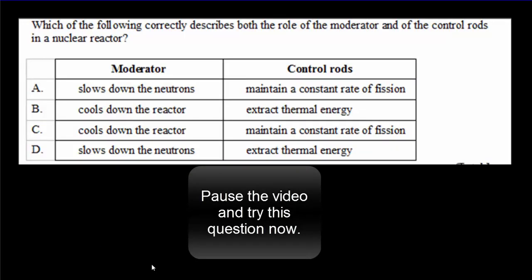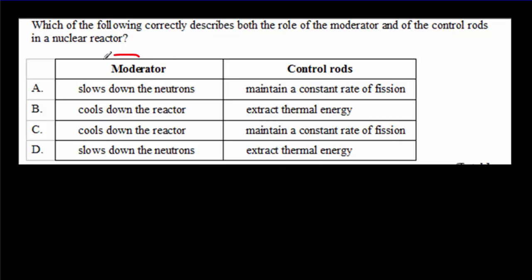And now I have a couple of IB questions for you. What I'd like you to do is to pause the video, read the question over, try it out for yourself, and then come back for the answer. Okay, the moderator. That would be the water that surrounds the fuel rod. And it will slow down those neutrons so that when the neutrons hit a uranium, they'll be moving slowly enough that the uranium can capture that neutron and undergo fission. So the correct answer has to be A or D. And then let's look at the control rods. The control rods, you lower those down to change the rate of reaction. So you're trying to control the rate of reaction. And the best answer there would be to maintain a constant rate of fission. So the correct answer would be A here.